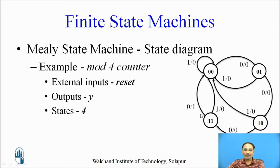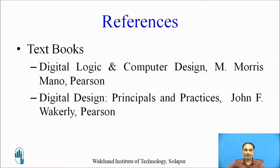Here you can observe that the output depends on the present state and the applied input. Instead of showing the output inside the state, the outputs are shown on the transitions. This is an example of a Mealy state machine for a 2-bit counter. These are the textbooks you can refer to for further reading.